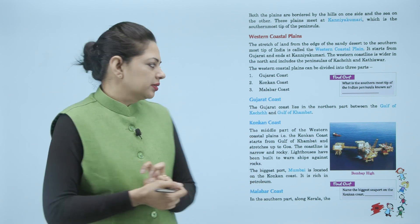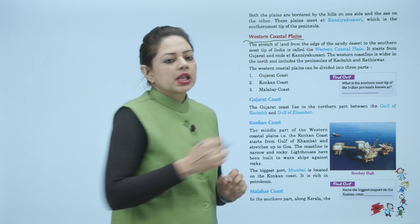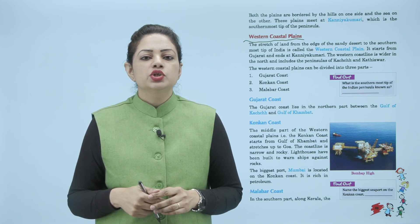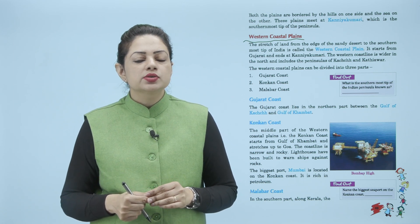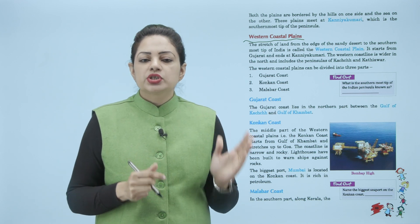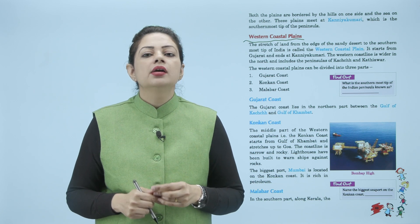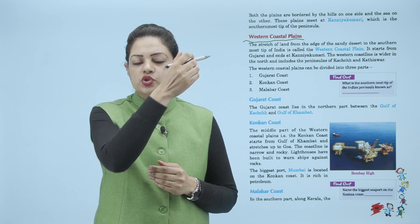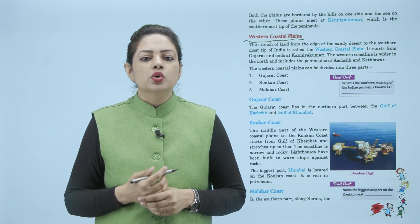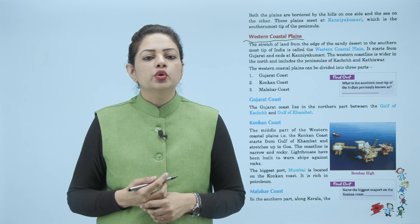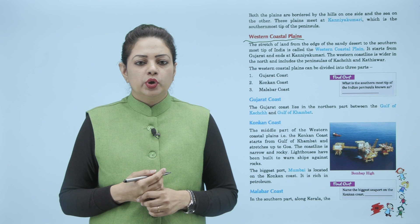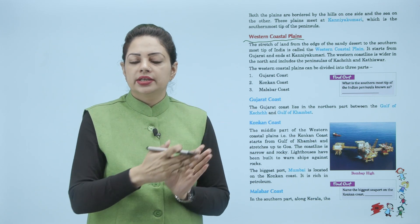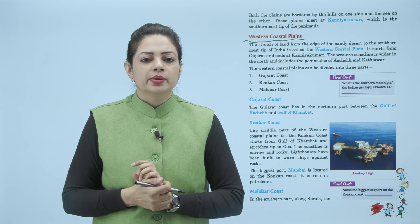Now hum baat karte hain western coastal plains ki. The stretch of land from the edge of the sandy desert to the southernmost tip of India is called the western coastal plain. It starts from Gujarat and ends at Kanyakumari. The western coast is wider in the north and includes the peninsula at Kach and Kathiwar. Upar se wider mein shuru hote hain aur niche aate aate kam ho jaate hain, ya Kach aur Kathiwar mein convert ho jaate hain.